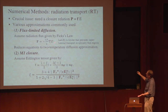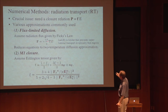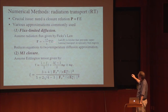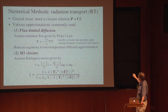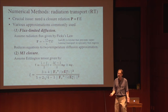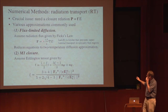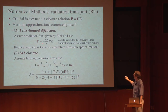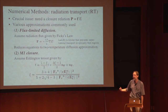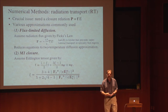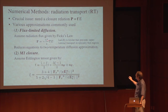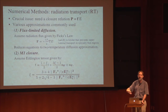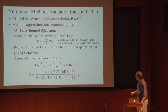One approach is flux-limited diffusion — just assume the flux is given by Fick's law, the gradient of the energy density. Where lambda is some limiter that prevents superluminal transport in optically thin regimes. If you applied Fick's law directly in optically thin regions, you'd find a flux exceeding c times E, violating causality. This limiter has the right limits in the optically thin and thick regions to give the correct solution. The Levermore-Pomraning limiter is probably the most popular, also one by Minerbo — both give the right limits.